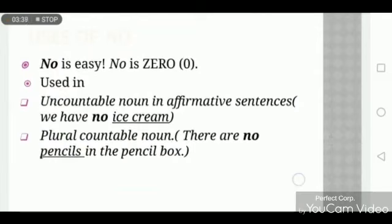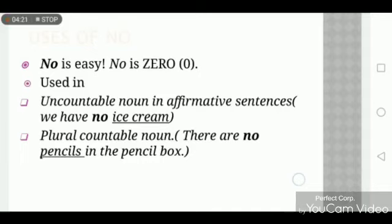Now let's look at the uses of 'no'. No is easy — no means zero. When the noun is quantified as zero, we use 'no'. We use 'no' with uncountable nouns in affirmative sentences. For example: 'We have no ice cream.' Ice cream is uncountable and the statement is affirmative. We also use 'no' with plural countable nouns, for example: 'No pencil.' Pencil is a countable noun.